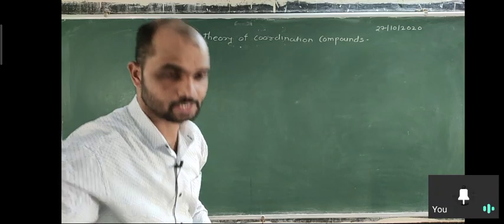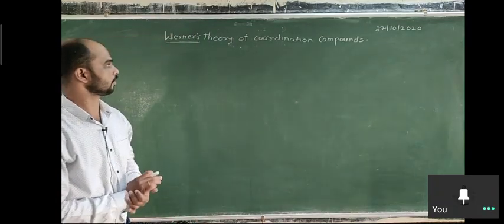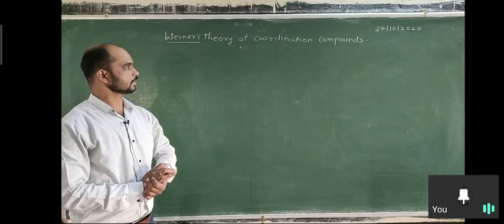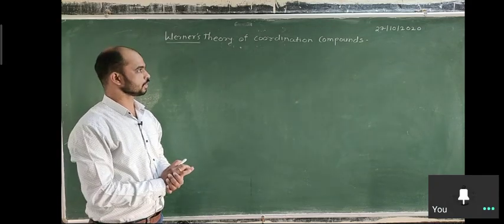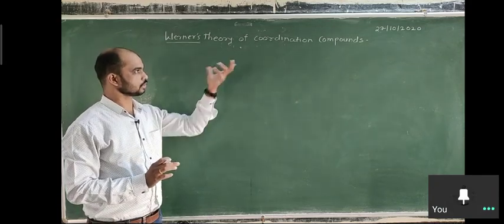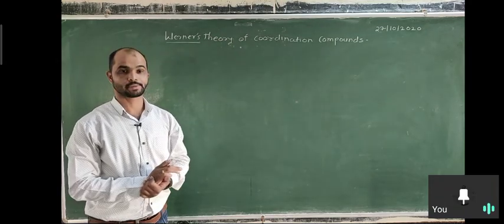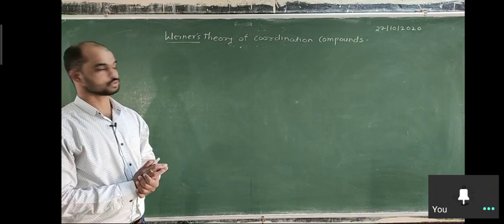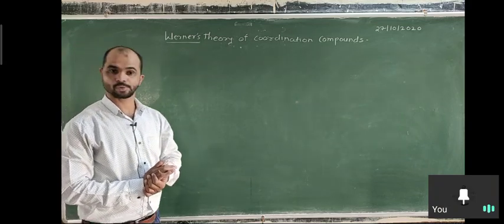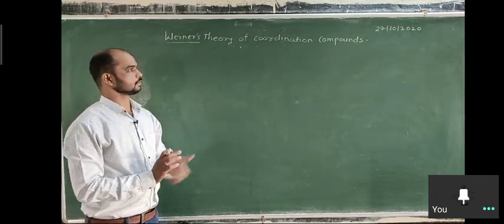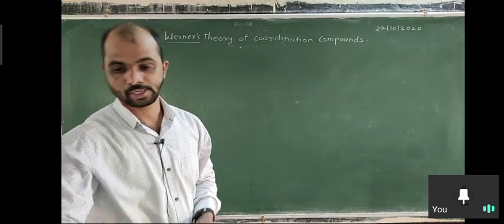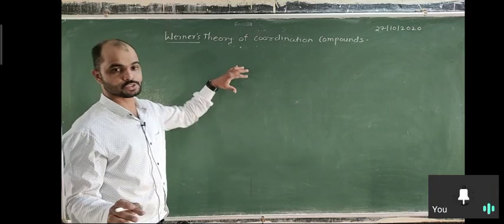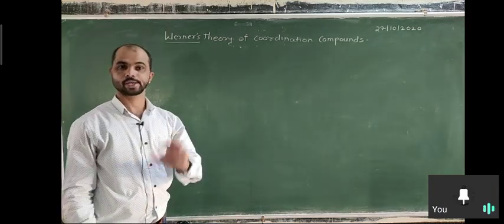Werner is the name of the scientist who introduced coordination chemistry, and that's why he is called the father of coordination chemistry. At the age of 26 he introduced coordination chemistry and won the Nobel Prize in 1911 for this work. He was first awarded in 1911, but in 1893 he first introduced different concepts of inorganic compounds.